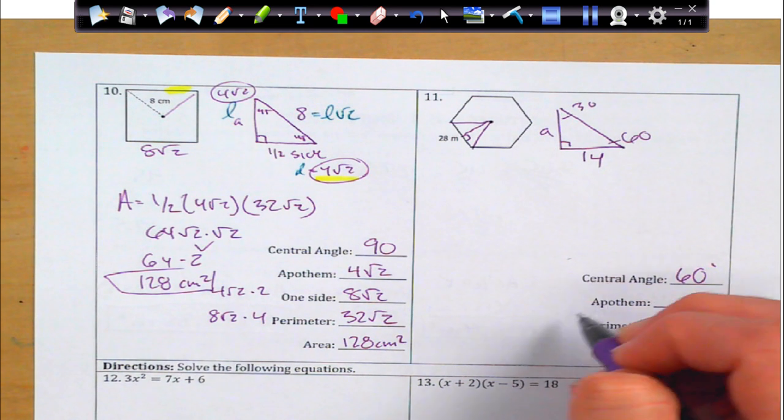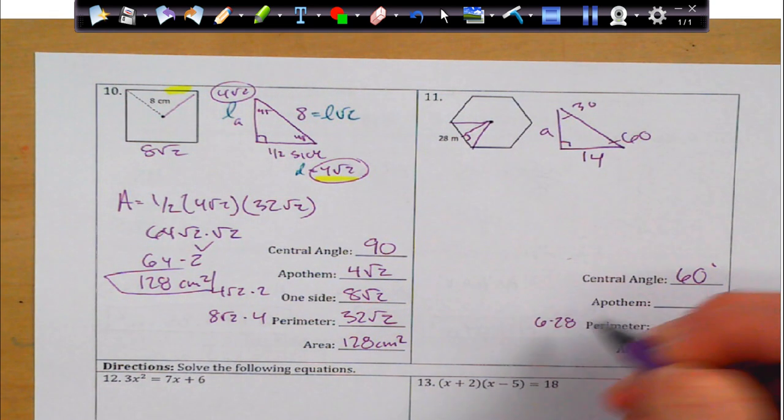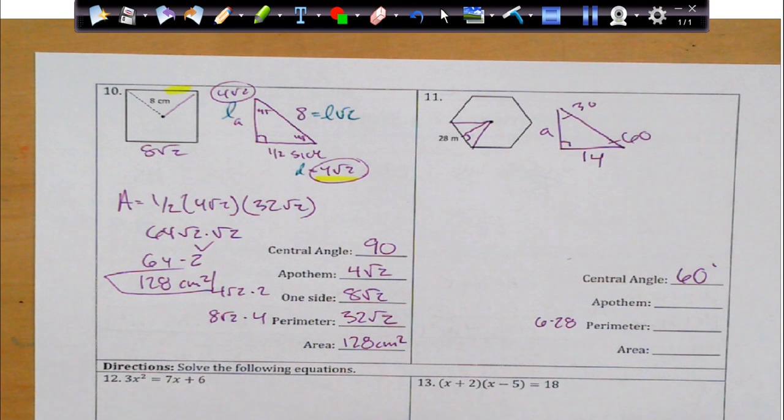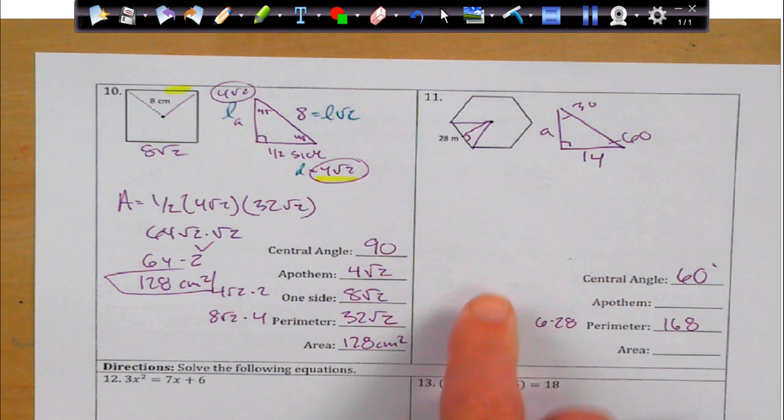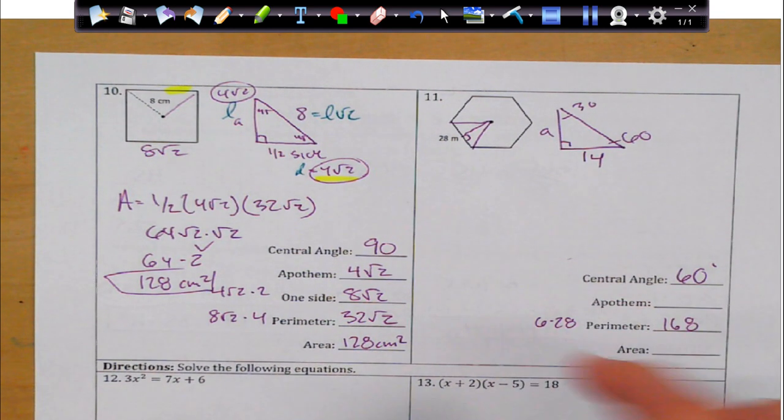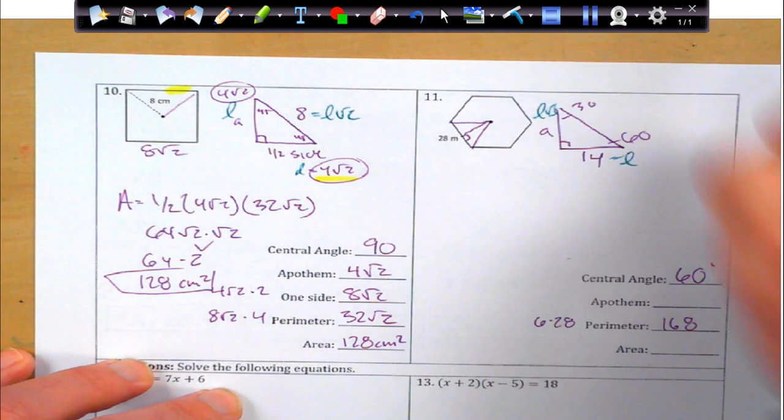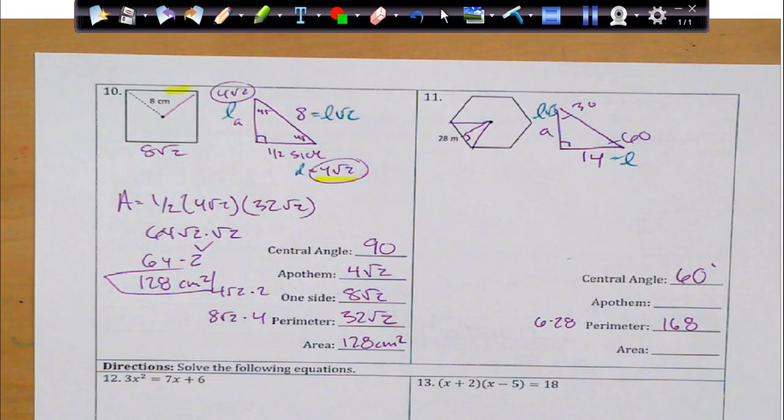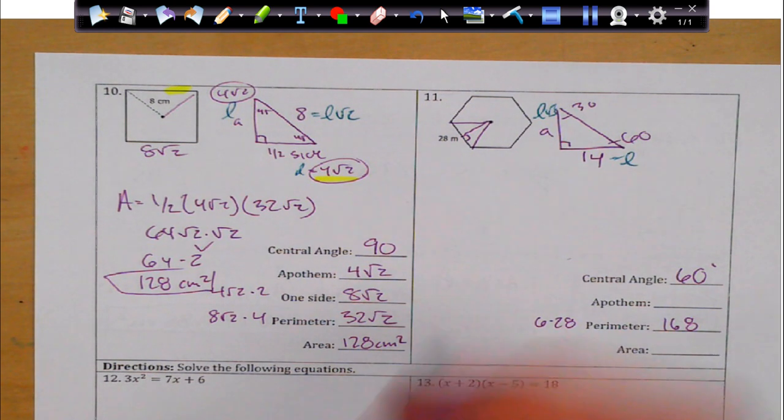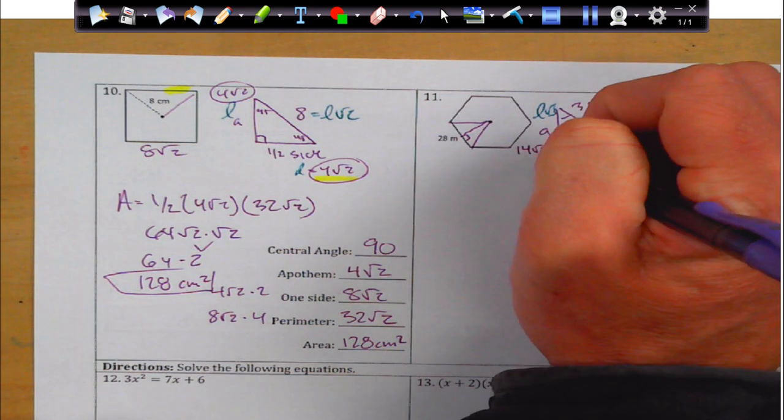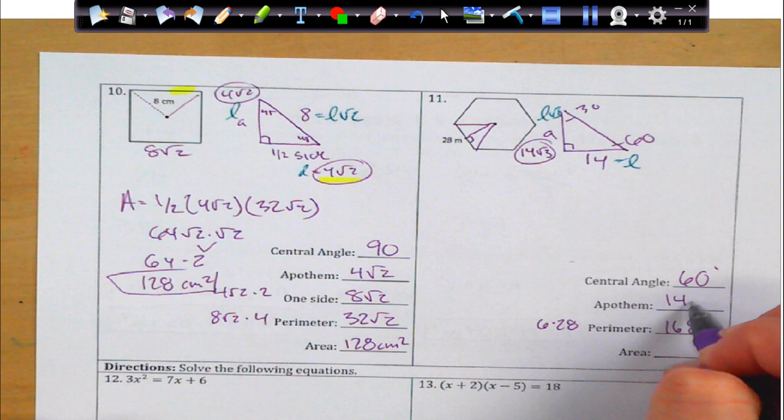So, apothem, I do not know. Perimeter, I can find pretty easily. It's just going to be 6 times 28. So, I'll take care of that real quick to get 168. But now, I've got to solve for the apothem. I can do that pretty easily. This is in the L position. This is in L rad 3. And they couldn't have served it up to me any nicer. If I got 14 as L, apothem is going to be 14 rad 3. So, very easy.